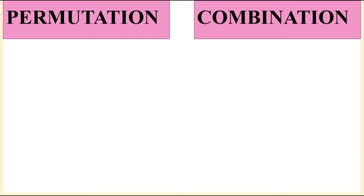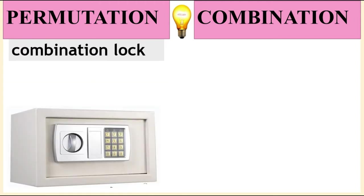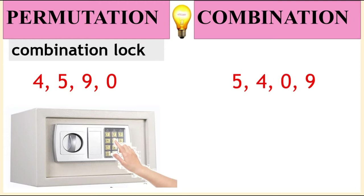Here's an idea that will suggest permutation or combination: the combination lock. For example, you have this safety box and its combination code is 4, 5, 9, 0. If you press 5, 4, 0, 9, the safety box will not open because it is a different code. This suggests permutation because the order matters. If the code is 4, 5, 9, 0, you must enter 4, 5, 9, 0, not 5, 4, 0, 9 or others.